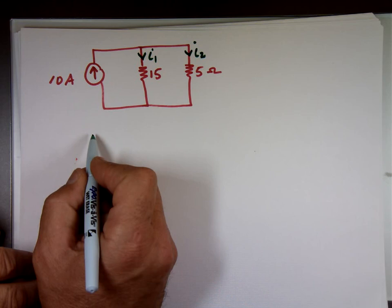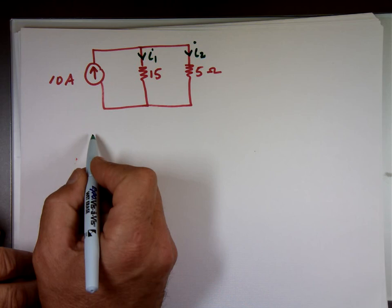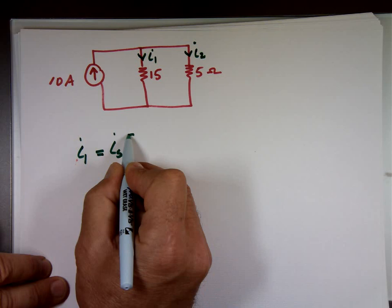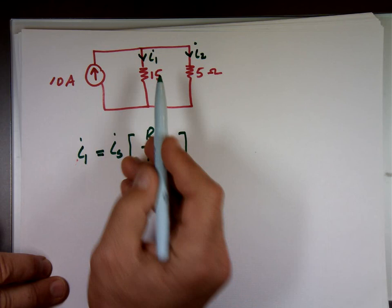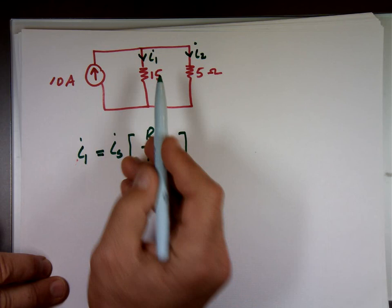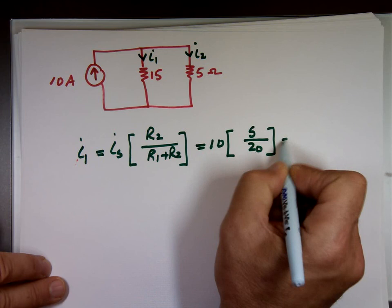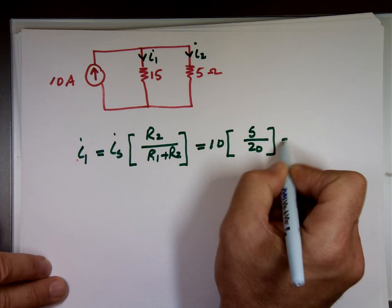In theory, if you have one current, you can just find the other current. Sure. KCL. Absolutely. I sub 1 is going to be what? The source times R2 over R1 plus R2. So if this is I sub 1, if I define this as I sub 1, then the 15 is R sub 1, the 5 is R sub 2. Always matching. So here that would be 10 times the 5 over the sum of them. What's 5 plus 15? 20. And what do we have? 2.5 amps.